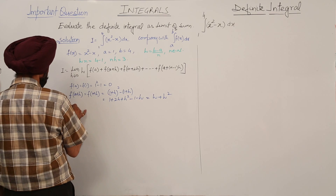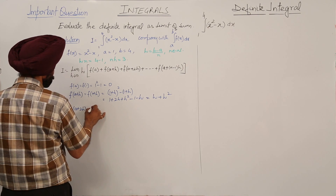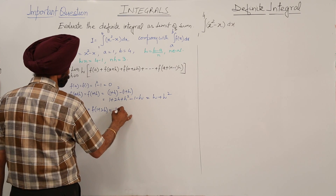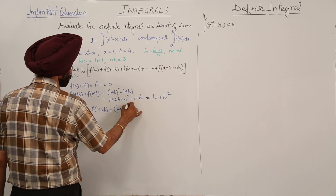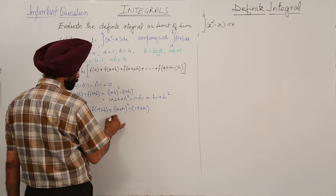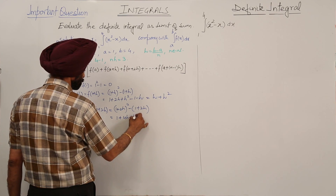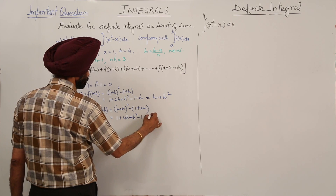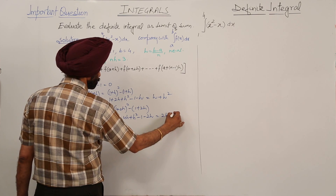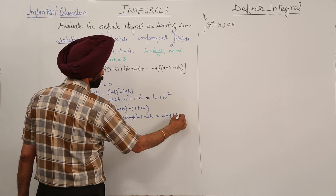For f(a+2h): f(1+2h) = (1+2h)² - (1+2h) = 1 + 4h + 4h² - 1 - 2h. Solving this, we are left with 2h + 4h².